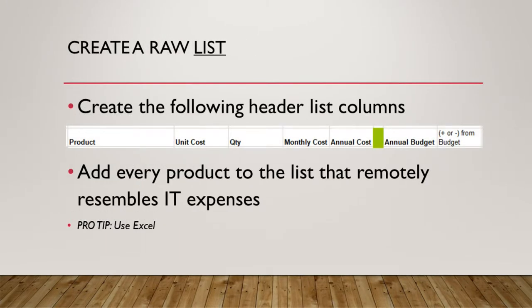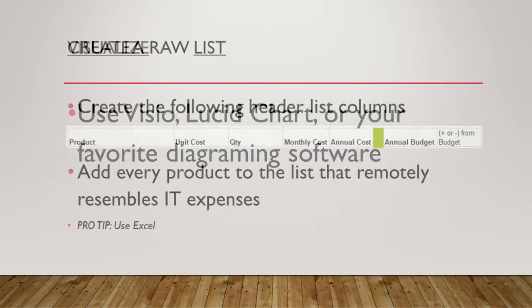The first thing you're going to do is create a raw list of all of your IT expenses. Get out Excel and create the following header columns: product, unit cost, quantity, monthly cost, annual cost, annual budget, and plus or minus from budget. Fill in every product that you can possibly imagine relates to IT expenses. You can remove items later, but for now put everything in so you can evaluate it as a group within your organization before you kick it out of the budget.